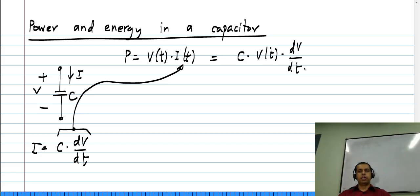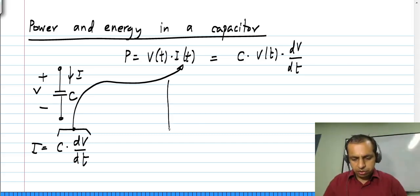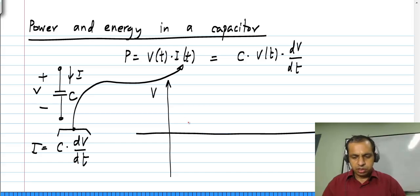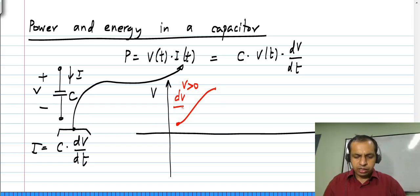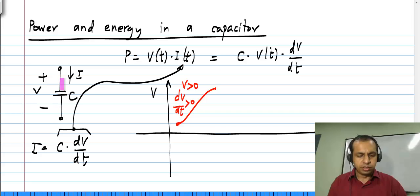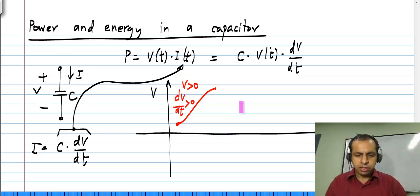This expression looks a little more complicated than that for a resistor. The important point is that this is the power delivered to the capacitor and it can be either positive or negative. Consider a voltage waveform where the voltage is positive and its derivative is positive — there is positive charge on the upper plate increasing with time, so current flows into the upper terminal. The current is also positive, so the product is positive and the capacitor is absorbing power.